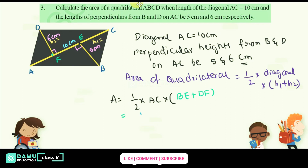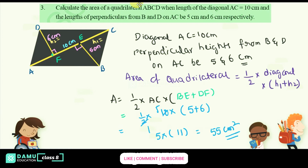Substituting the values: half into 10 into (5 plus 6). That gives 5 into 11, which equals 55 cm squared. That is the area of the quadrilateral.